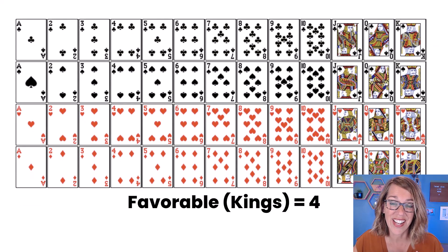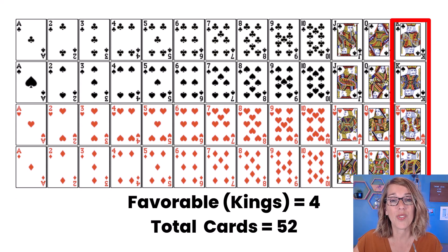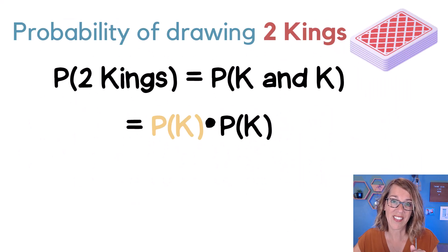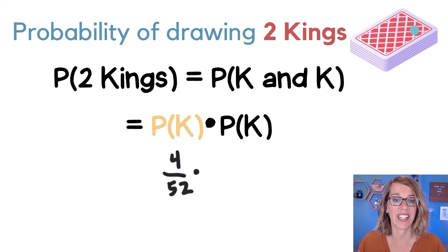Now in our standard deck of cards, there are four kings and 52 cards total. So as I put that probability together as favorable out of total, I end up with 4 over 52. And I'm going to multiply that times the second probability. So let's go ahead and find the probability for drawing a second king.